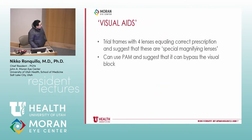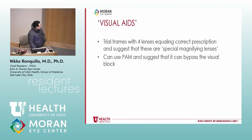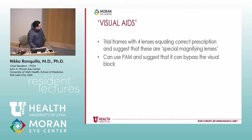There are other visual aid approaches: give a trial frame with essentially the correct prescription and suggest these are special magnifying lenses, then see if they can see a little better. The potential acuity meter can also be used — tell them it can bypass the visual block and see if they show any improvement in vision. It's similar to a pinhole test.